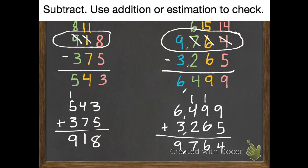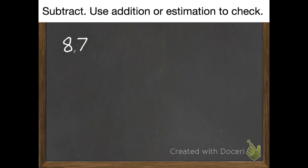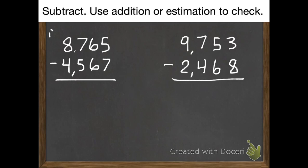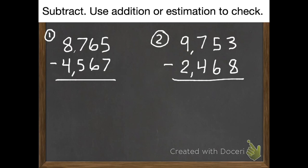Here are your two homework problems to bring in tomorrow — same instructions, subtract and use addition or estimation to check. Problem one: 8,765 subtract 4,567. Problem two: 9,753 subtract 2,468. Thank you for listening and have a wonderful day!